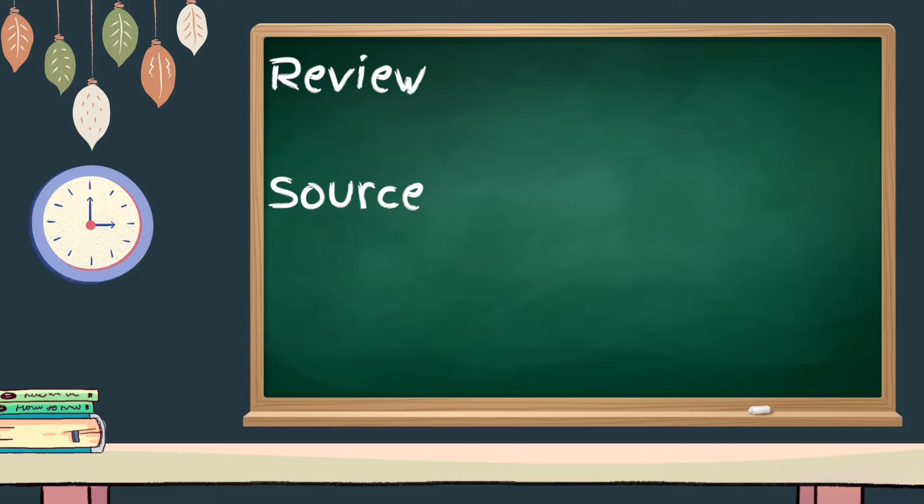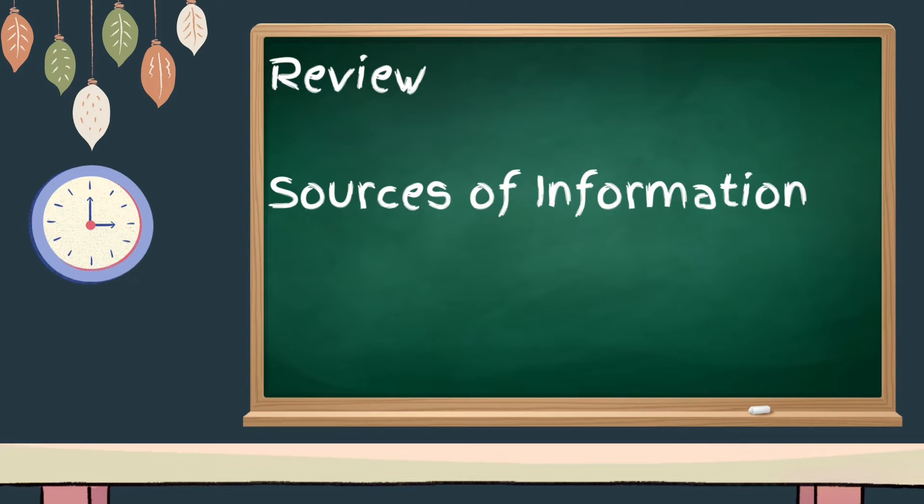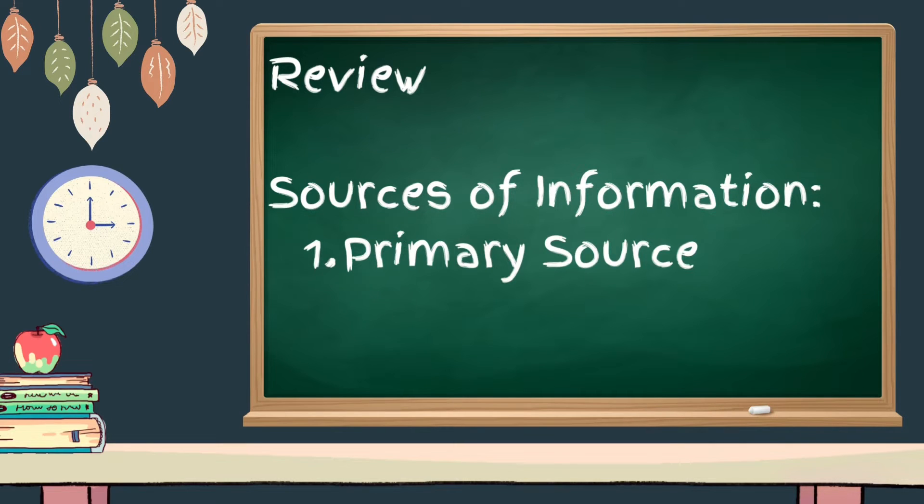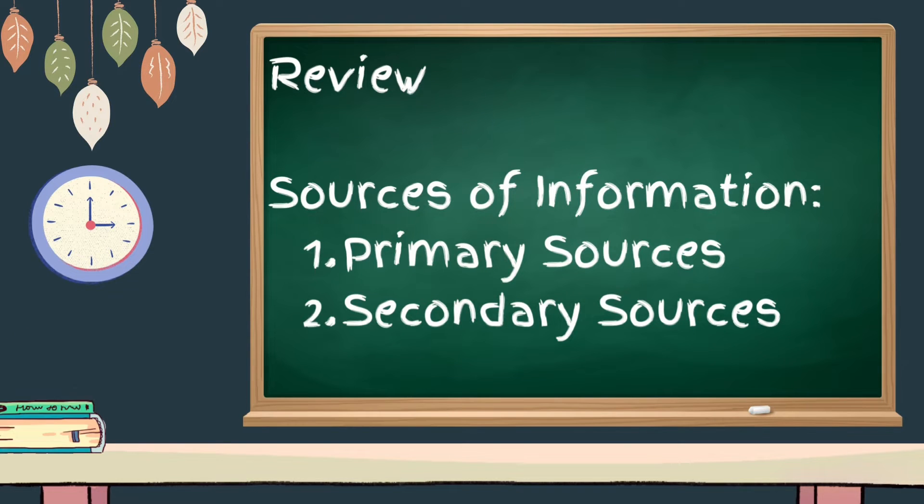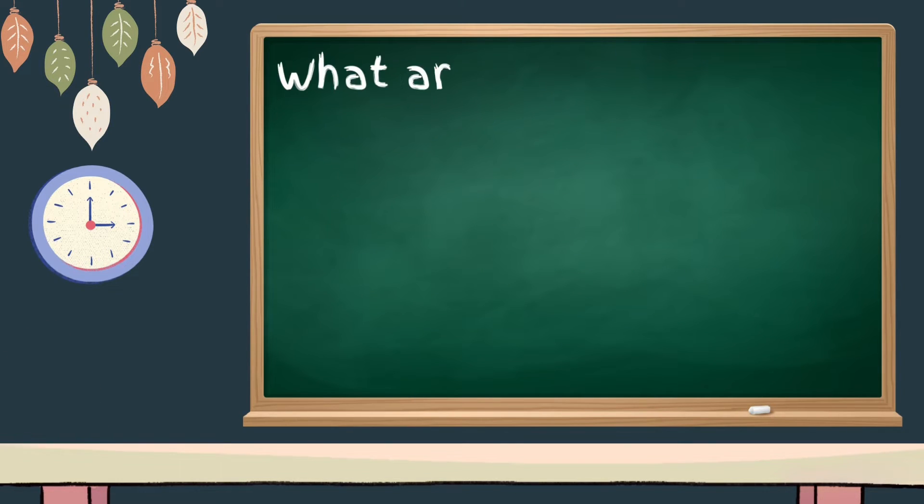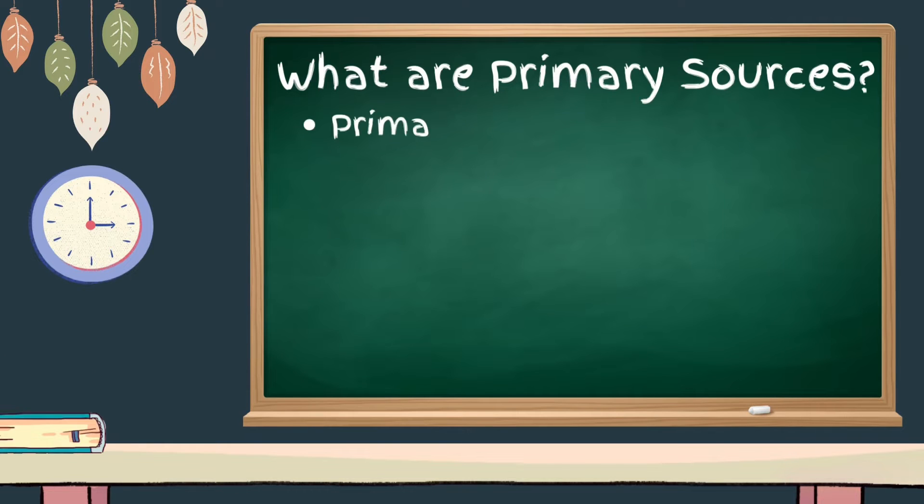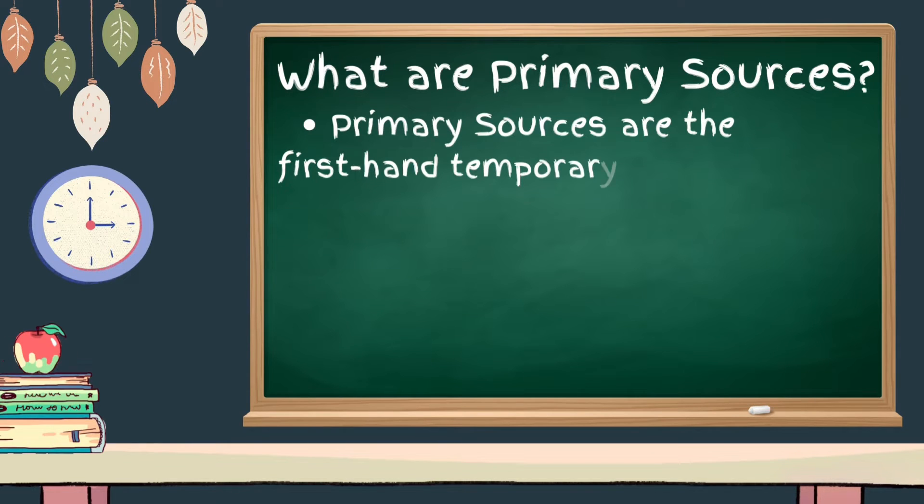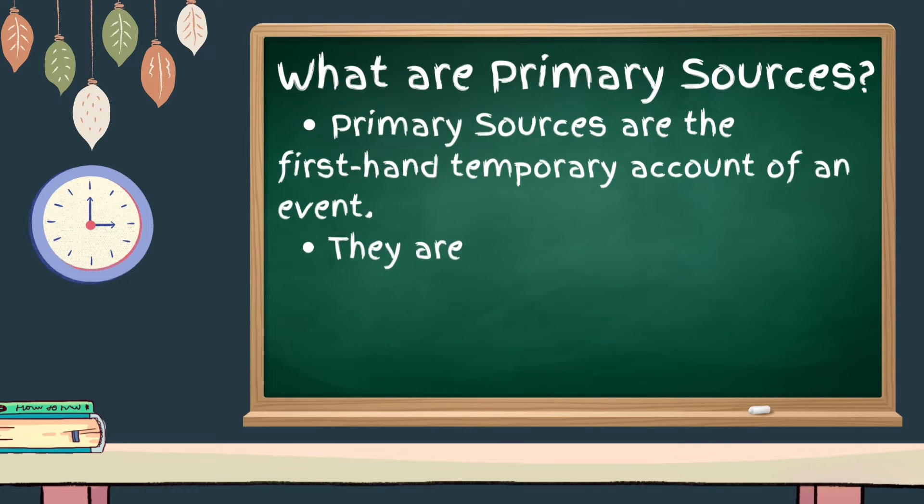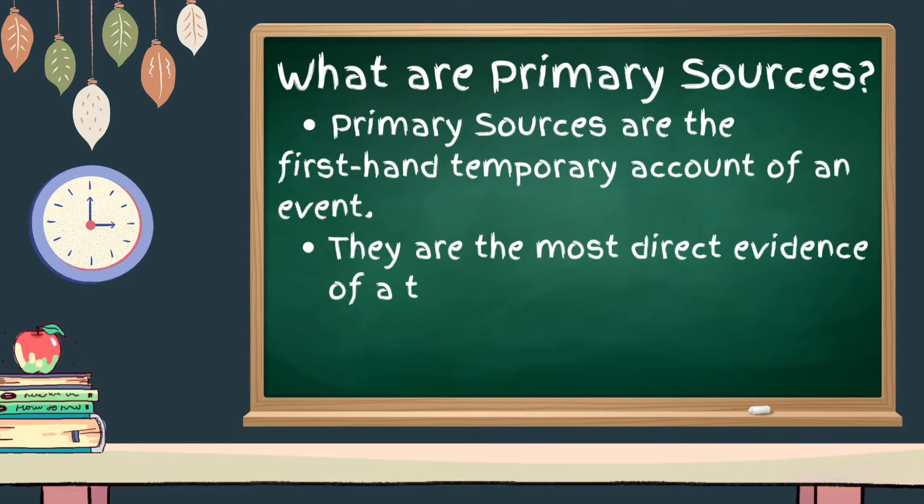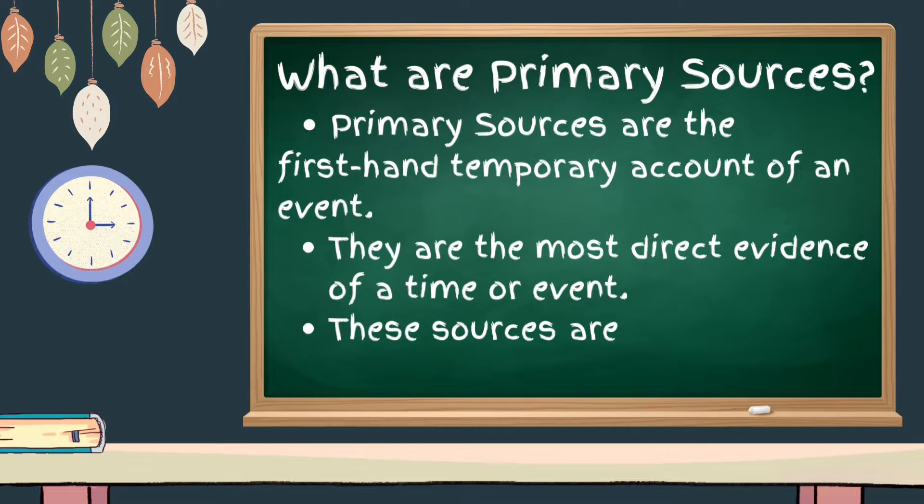Let's have a review. Sources of information are primary sources and secondary sources, right? So, what are primary sources? Primary sources are the first-hand contemporary account of an event. They are the most direct evidence of a time or event. These sources are original materials.